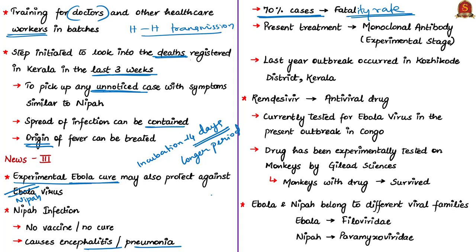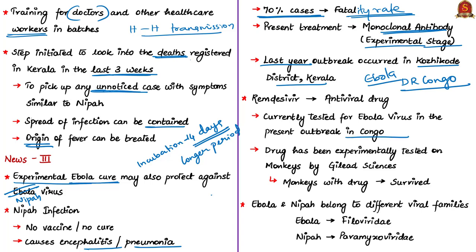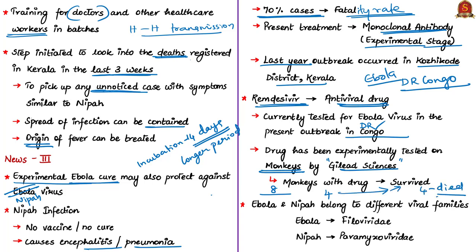There is one current treatment in the experimental stage for Nipah virus infection — the monoclonal antibody, tested during the Nipah outbreak in Kozhikode district of Kerala last year. An antiviral drug named Remdesivir, developed by American biotechnology company Gilead Sciences, is currently being tested for Ebola virus outbreak in the Democratic Republic of Congo. This drug was also used for experimental testing on monkeys: 8 African green monkeys were given lethal doses of Nipah virus, then 4 received the drug. The 4 that received the drug survived and the other 4 died within 8 days.